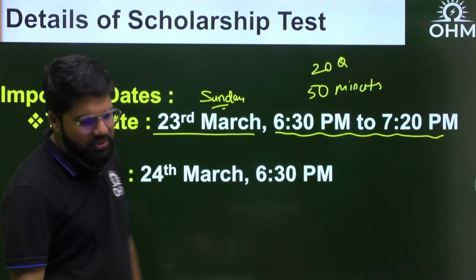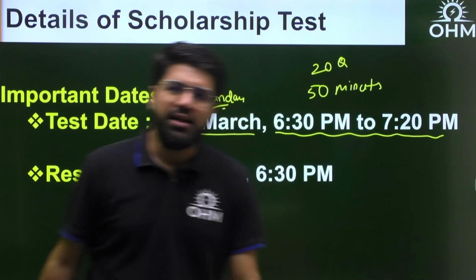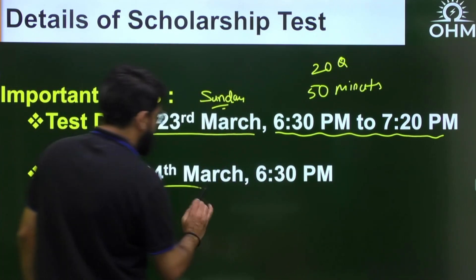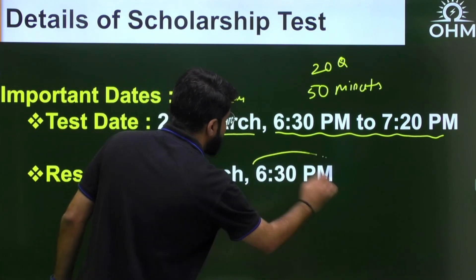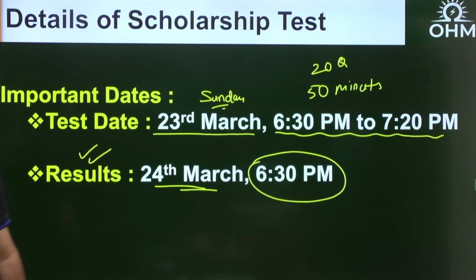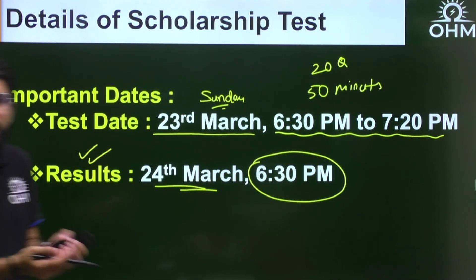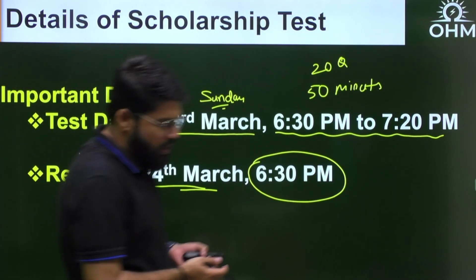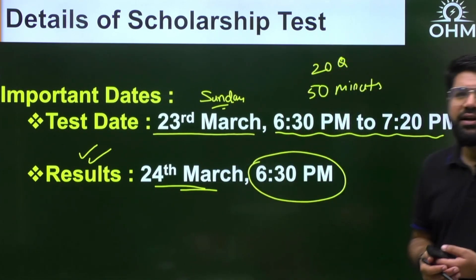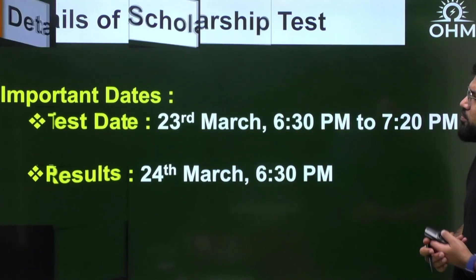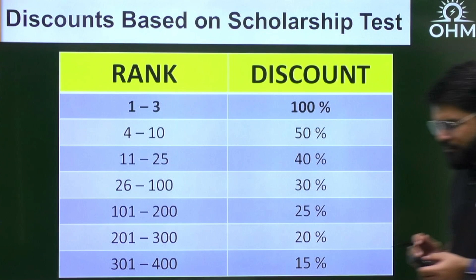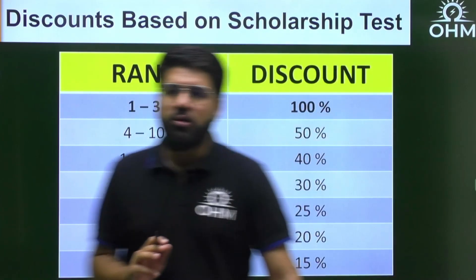Results will be announced within 24 hours, on 24th March at 6:30 PM. Based on your performance and ranking once the result is declared, you'll receive different scholarship levels.